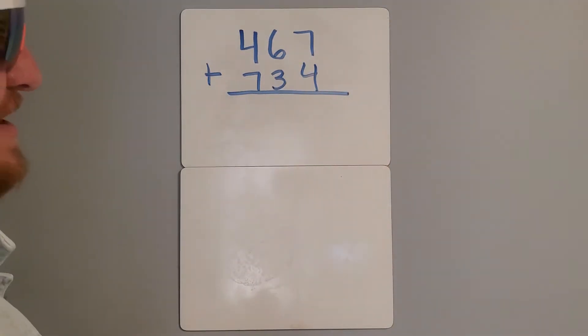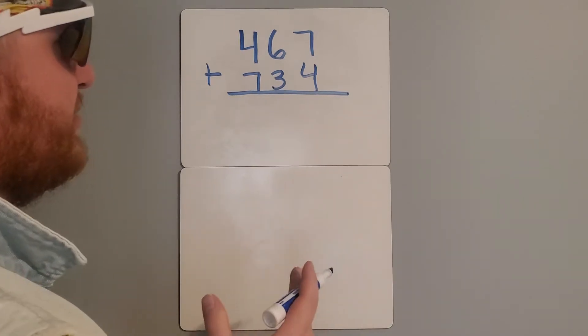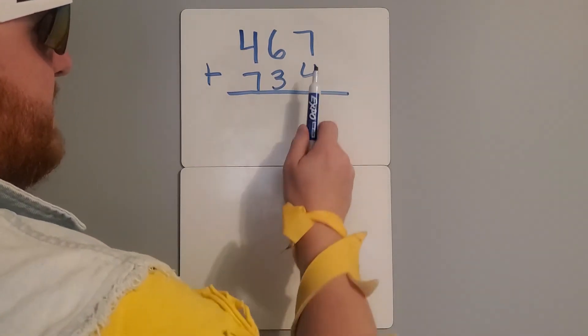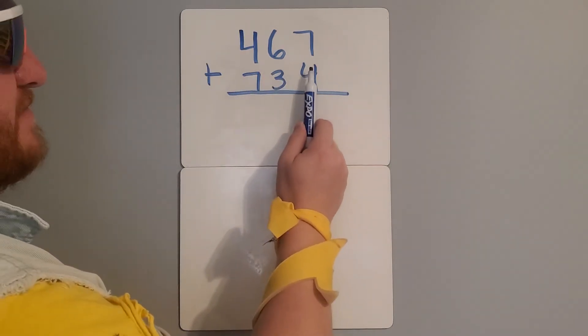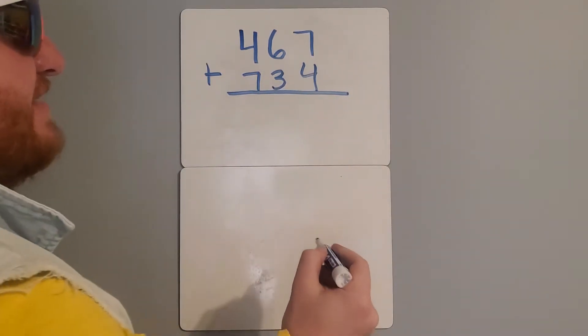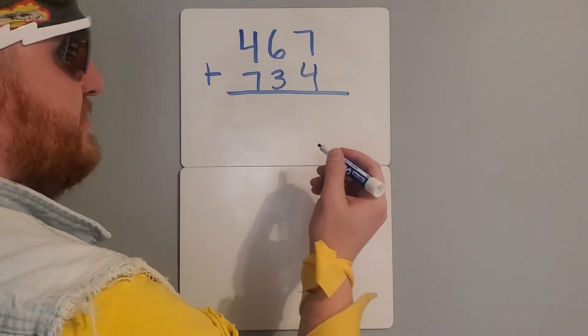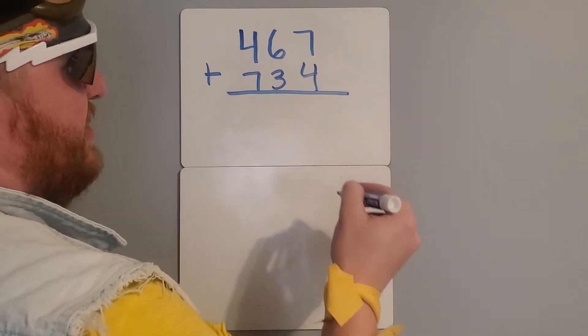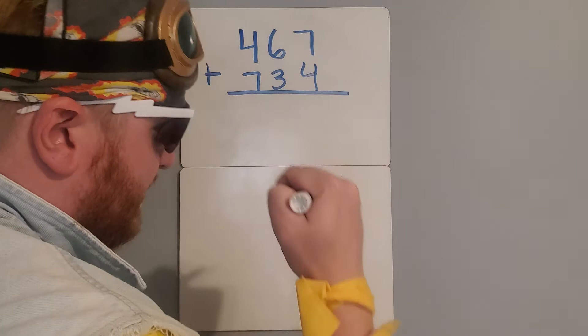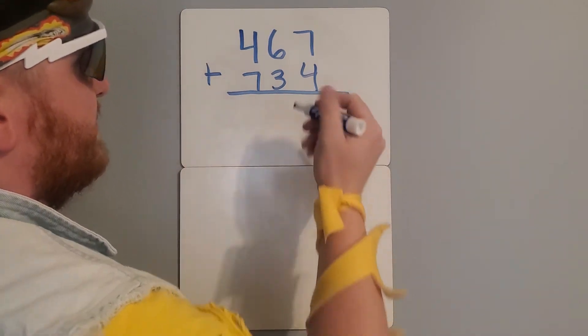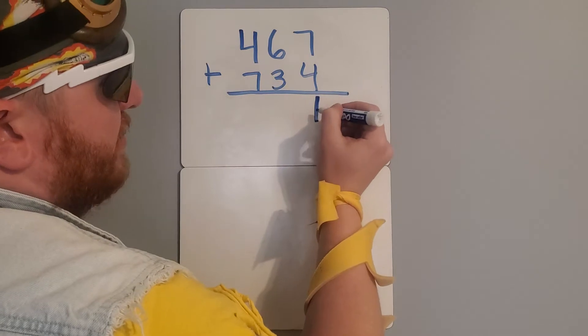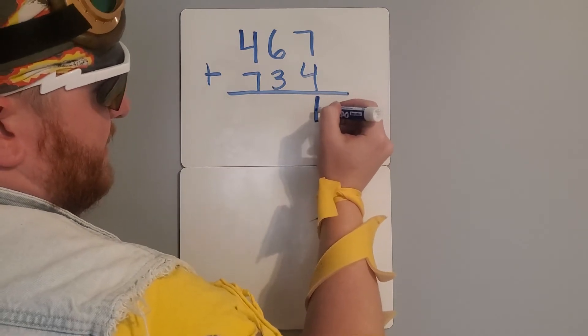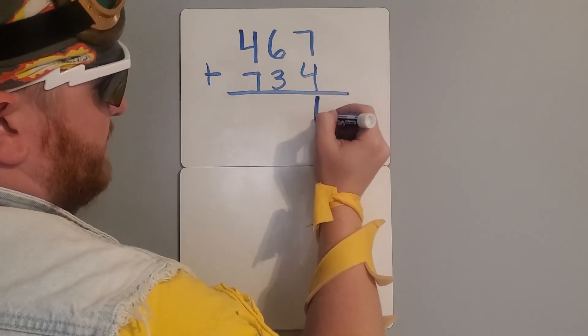All right, anytime I'm adding, I start in the ones place. This will be my ones, my tens, and my hundreds. So I'm starting in my ones place. 7 plus 4 is going to be 11. I'm thinking in my head to 7, I count up 4, 8, 9, 10, 11. So I'll put the 1 from my 11 from the ones place in the ones place.